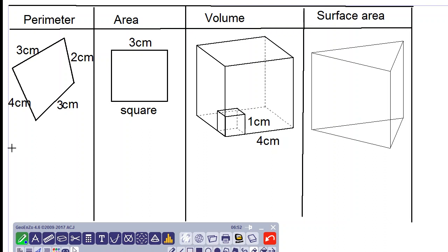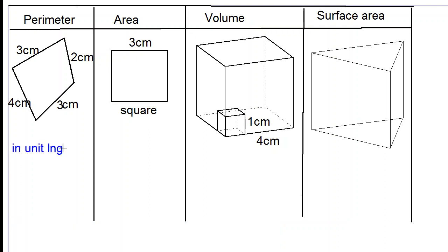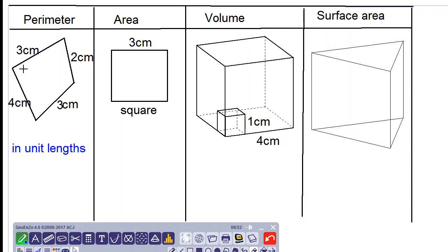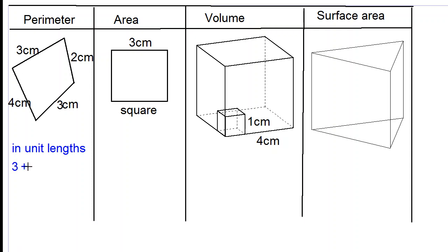Now perimeter is measured in terms of unit lengths. So therefore we are measuring it in terms of one centimeter length. So we will just add up all the lengths around the shape. So we have 3 plus 2 plus 3 plus 4 which will give 12 centimeters. So the perimeter of this quadrilateral is 12 centimeters, measured in unit lengths.